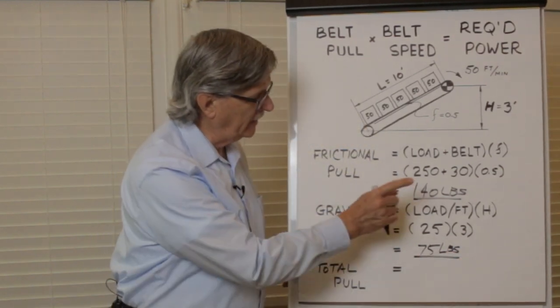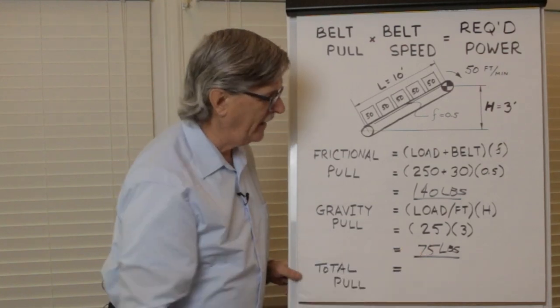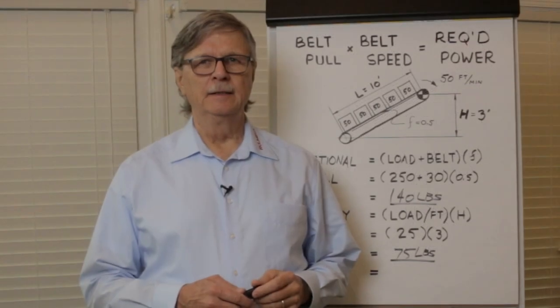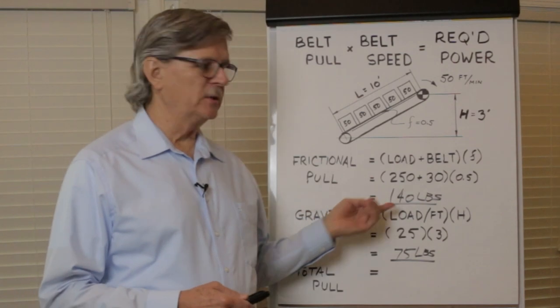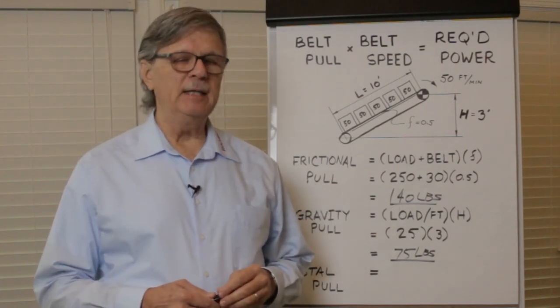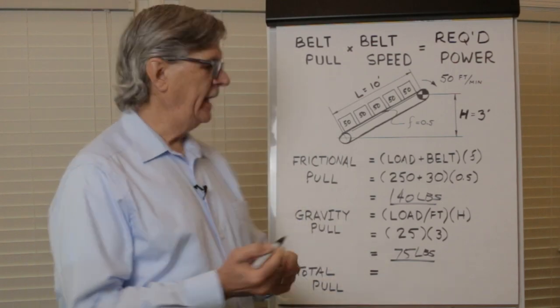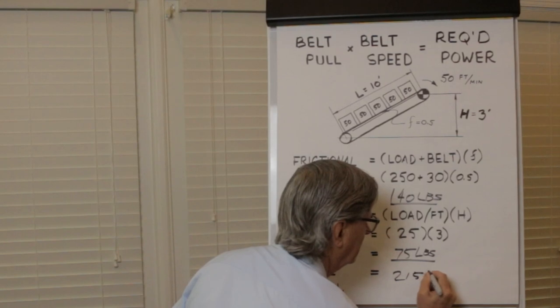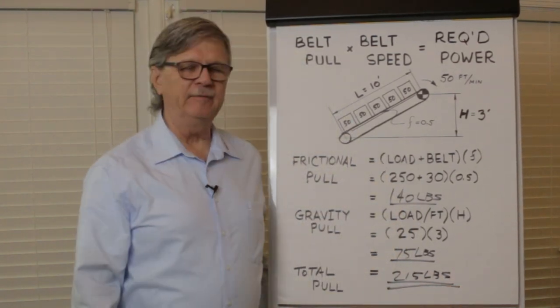Pull required to overcome friction is 140 pounds. Pull required to overcome gravity is 75 pounds. We now know that required belt pull to overcome friction equals 140 pounds and the belt pull required to overcome gravity is 75 pounds. Adding those two numbers together we get a total required belt pull of 215 pounds.